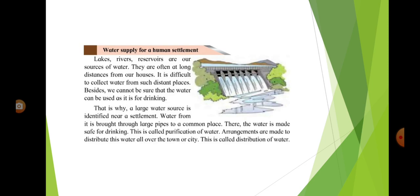Water supply for a human settlement. Lakes, rivers, reservoirs are our sources of water. They are often at long distances from our houses. It is difficult to collect water from such distant places.